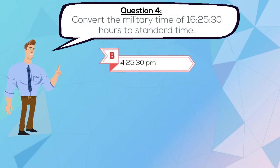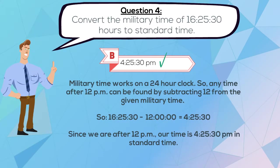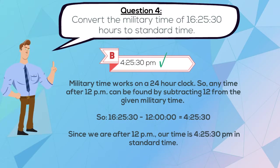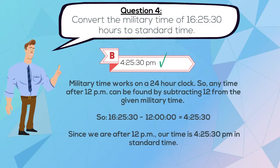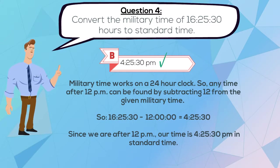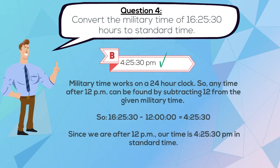The correct answer is B, 4:25:30 p.m. Military time works on a 24-hour clock, so any time after 12 p.m. can be found by subtracting 12 from the given military time. So 1625:30 minus 12 gives us our time of 4:25:30. Since we are after 12 p.m., our time is 4:25:30 p.m. in standard time.